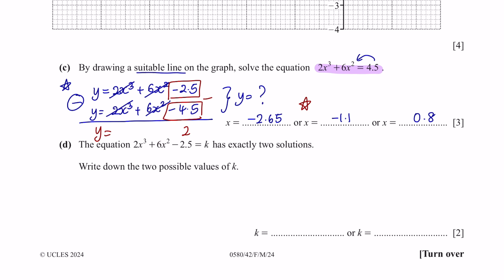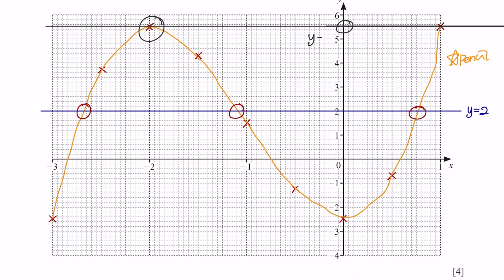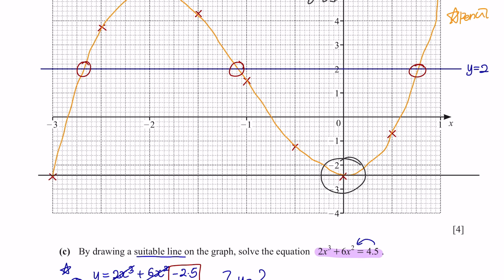Next, question D. The equation equals K has exactly 2 solutions. Write down the 2 possible values of K. So the first one is at y equals 5.5, and for the second solution, it's at y equals 2.5.